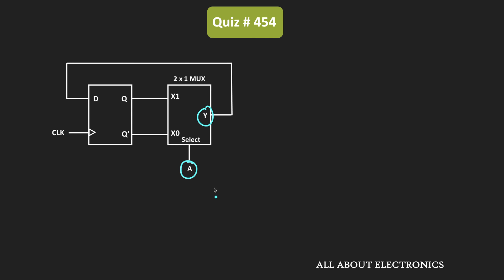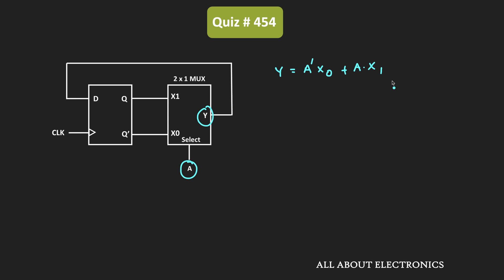In this 2x1 multiplexer, when A is equal to 0, then the x0 input will get selected. Similarly, when A is equal to 1, then the x1 input will get selected. Algebraically, we can say that the output y is equal to A'·x0 plus A·x1. That means whenever A is 0, x0 will get selected, and when A is 1, x1 will get selected.